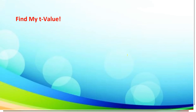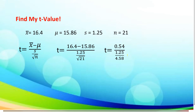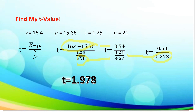Now let's have another activity entitled 'Find my T-value.' Let us solve the T-value with the following given: x-bar is 16.4, mu is 15.86, s is 1.25, and n is equal to 21. Using the formula, we substitute: 16.4 minus 15.86, divided by the quotient of 1.25 and the square root of 21. The difference of 16.4 minus 15.86 is 0.54, and the square root of 21 is 4.58. Solving 1.25 divided by 4.58, we have 0.273. So, 0.54 divided by 0.273, the value of T is 1.978.